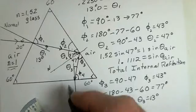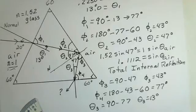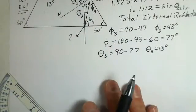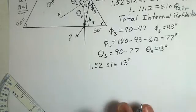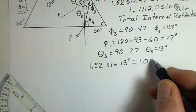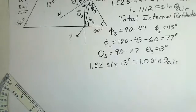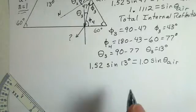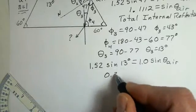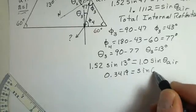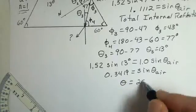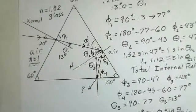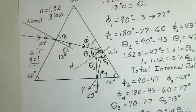Let's try to refract the light out into the air and check whether we have total internal reflection again. We're in the glass, so we use 1.52 for the index of refraction in the glass. Our angle is 13 degrees away from the normal. The air has index of refraction 1. Multiplying: 1.52 times sine of 13 degrees gives 0.3419 for sine of theta air. Taking the inverse sine, I get 20 degrees. This ray does exit the glass at 20 degrees from the normal.